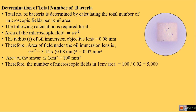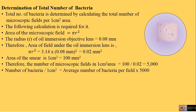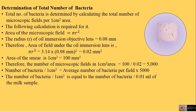From this, we can calculate the total number of microscopic fields in 1 cm². Dividing 100 by 0.02 gives 5000 — the total number of fields in 1 cm². The number of bacteria per cm² equals the average number of bacteria per field multiplied by 5000. Thus, the number of bacteria per cm² area equals the number of bacteria per 0.01 ml of milk sample.